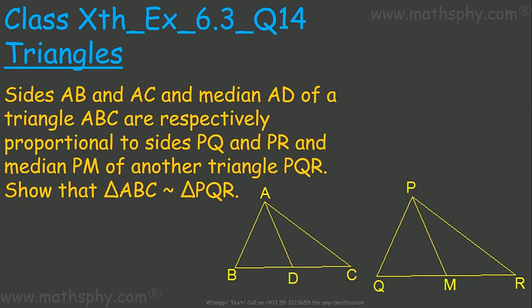This question states that sides AB and AC and median AD of triangle ABC are respectively proportional to PQ, PR, and median PM of triangle PQR. What we have to prove is that triangle ABC is similar to triangle PQR. Unlike the earlier similar question where we had AD/PQ = BC/QR = AD/PM, here we have AB/PQ = AC/PR = AD/PM, so we do not have BC/QR.